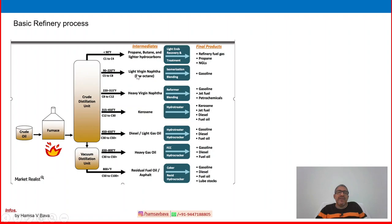From 90 to 220°F is C5 to C8, called naphtha, which goes to the petrochemical industry and various other applications. C8 to C12 is at 220 to 315°F, then C12 to C30 — temperature and boiling point are varying, and carbon content is increasing. From lighter C1 to C4 going up to C50, it gets to heavier hydrocarbon.